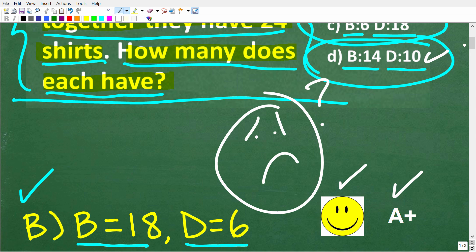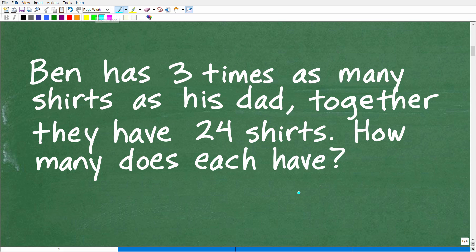We have a math word problem, and the first thing you want to do is always use the rule of three. In other words, read a problem at least three times before you really start doing anything in terms of writing out steps or equations. Make sure you understand the question and really assimilate all the details in the problem. The question here is, how many shirts does each have? When you're looking to answer a question that says how many of something, that's an unknown value.